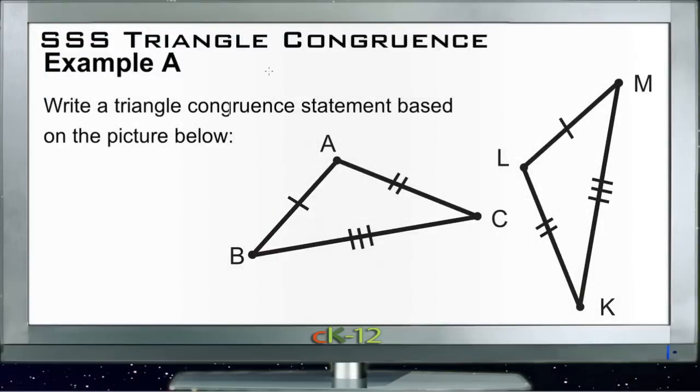Okay, let's take a look at SSS triangle congruence examples. Example A asks us to write a triangle congruence statement based on the picture. The picture tells us that side AB is congruent with side LM.